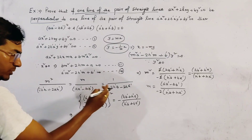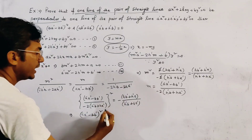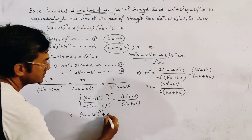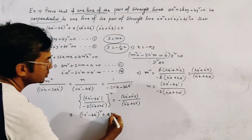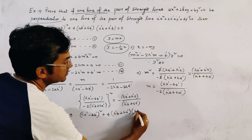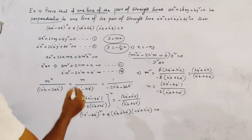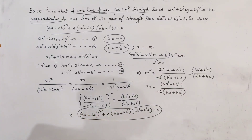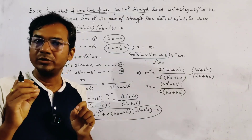By cross multiplication, we get (aa' - bb')² and writing all terms on the left side, the -2 factors cancel out, giving us (h'b + ha')(hb' + h'a) = 0 after simplification, or equivalently (aa' - bb')² + 4(hb' + h'a)(h'b + ha') = 0. This is our required result. We have thus very easily proved this important result of pair of straight lines.